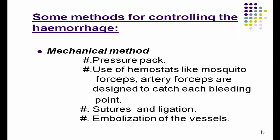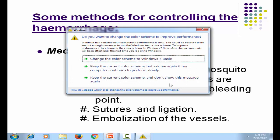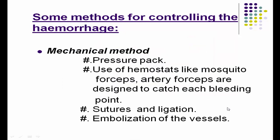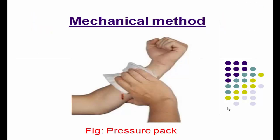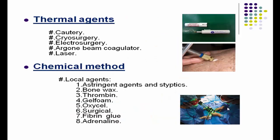Some methods for controlling hemorrhage include mechanical methods, which involve pressure packs, use of hemostatic clamps such as mosquito forceps and artery forceps — designed to catch the bleeding point — as well as sutures, ligation, and embolization of vessels. This picture shows the mechanical method of pressure pack on a bleeding point.